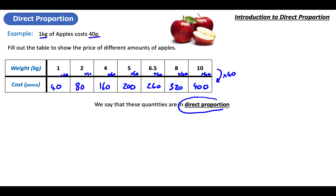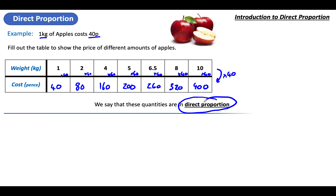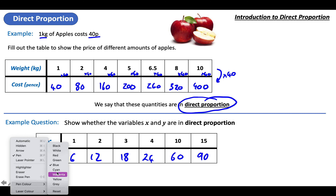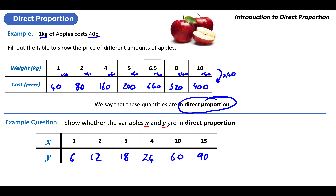If you multiply the top row by the same number every time to get the bottom row, then they are in direct proportion. Now here's the sort of question we're going to work towards. It says: show whether these variables x and y are in direct proportion. All I need to show is that there's the same multiplier taking us from the x values to the y values.